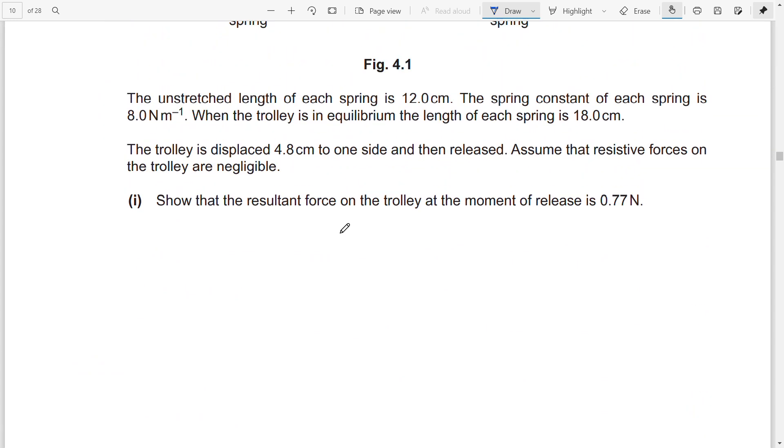Here, show that the resultant force on the trolley at the moment it is released is 0.77 N. What you can do is use F = kx. We have got 8.0 Nm⁻¹ times 0.096 m, so you'll get 0.768, which equals 0.77 Newton. This is for two marks.